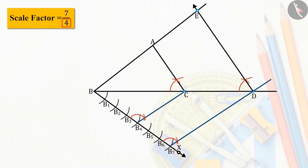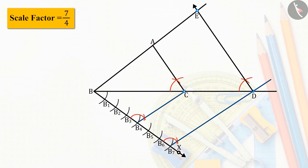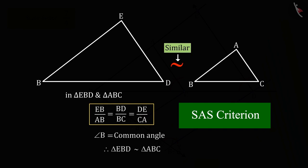From which we get the desired triangle EBD, whose sides are 7 upon 4 times the corresponding sides of the given triangle ABC. You can check the correctness of this desired triangle with the help of similarity of triangles yourself.